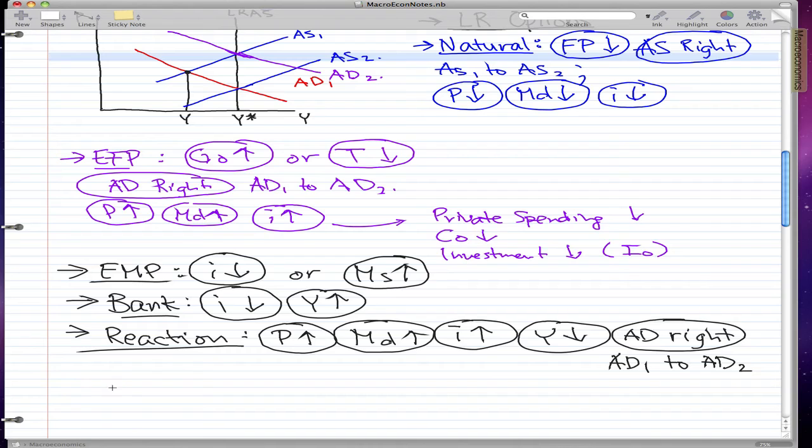But overall, the overall effect to the economy is that interest falls, Y increases from Y to Y star. How do I know overall? Well, this is just a general fact that you need to remember. The general fact is that the bank always beats the reaction.